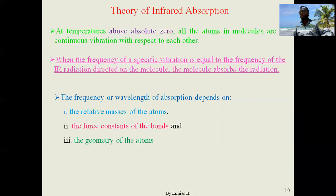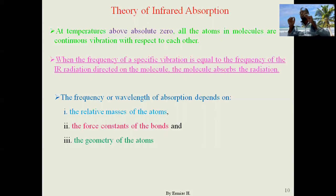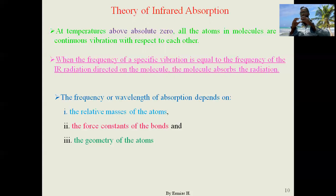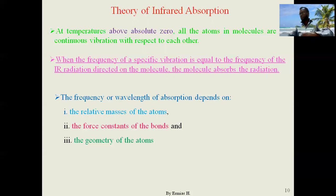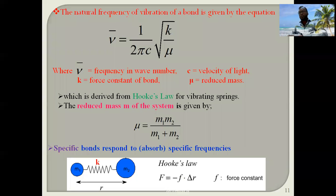Any diatomic molecule can be modeled as two vibrating masses connected by a spring. The bond distance continuously changes, but an equilibrium or average bond distance can be defined. Whenever the spring is stretched or compressed beyond this equilibrium, the potential energy of the system increases. The natural frequency of vibration of the bond is given by an equation derived from Hooke's Law.